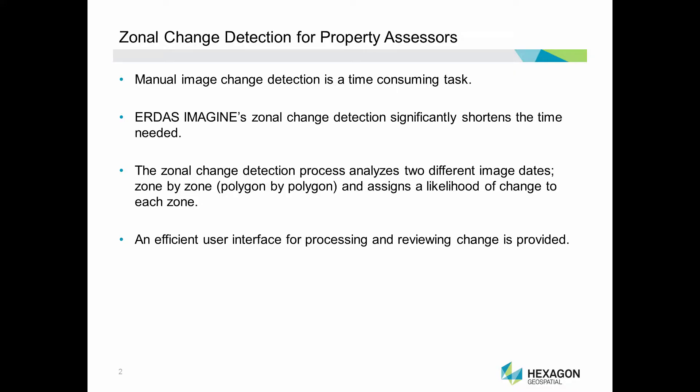Zonal Change Detection saves time and money by significantly reducing labor costs. The application uses two different dates of imagery together with a zone polygon file. Likelihood of change is then computed for each polygon, and a streamlined user interface is provided for verification and review.